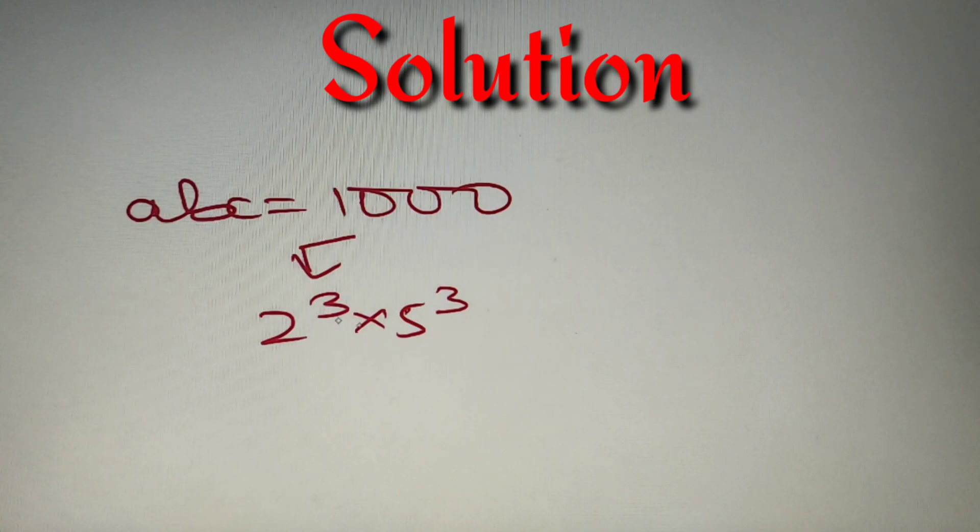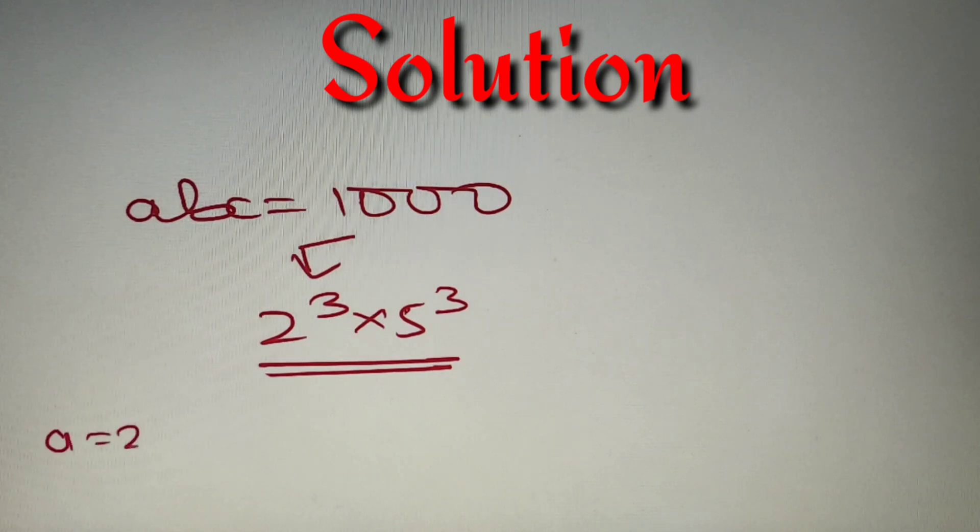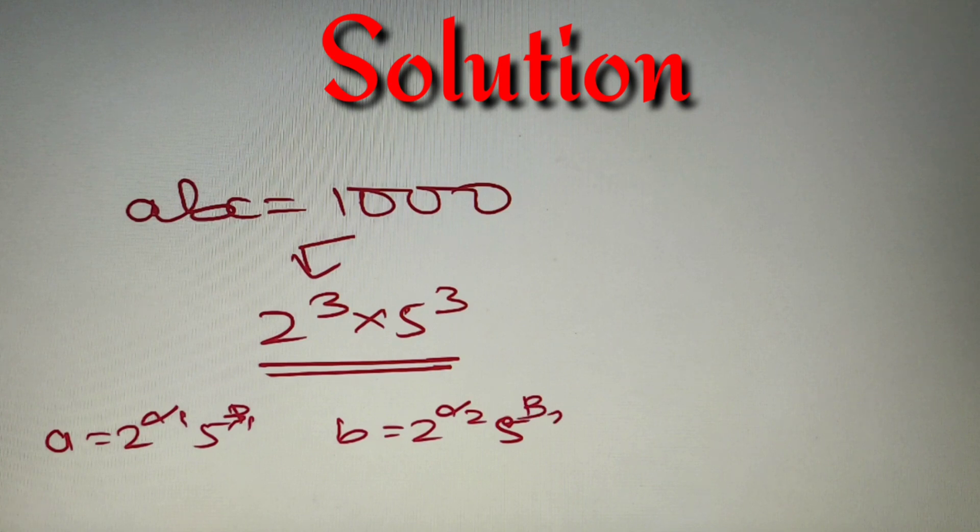Now we have to distribute 2s and 5s to A, B, C such that they'll comprise 1000. Let's assume A = 2^α₁ × 5^β₁, B = 2^α₂ × 5^β₂, and C = 2^α₃ × 5^β₃.